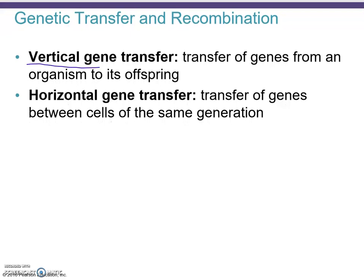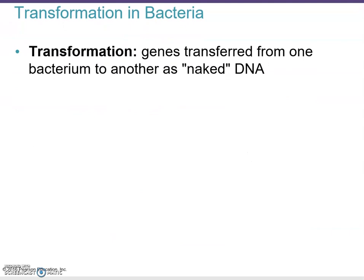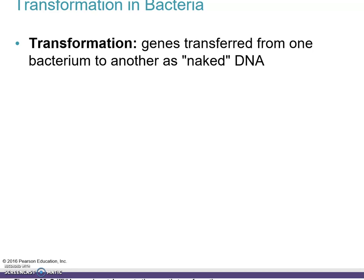Vertical gene transfer means you are transferring genes from an organism to its offspring — that is, between generations, from one generation to the next. Horizontal gene transfer is a transfer of genes between cells of the same generation, meaning they're not related as parent and daughter cells. Transformation in bacteria means genes are transferred from one bacterium to another as what's called naked DNA.